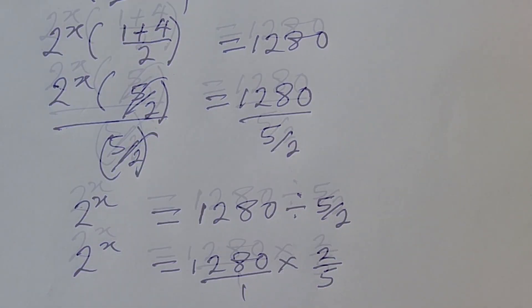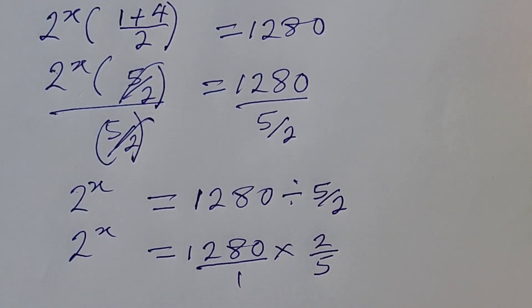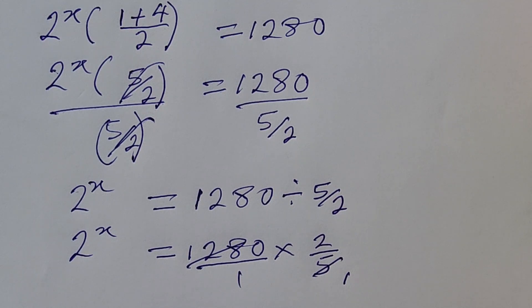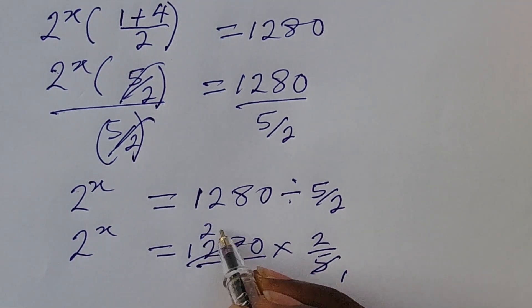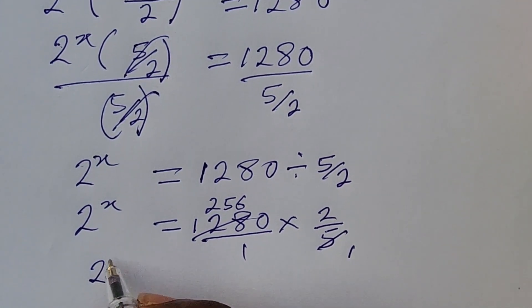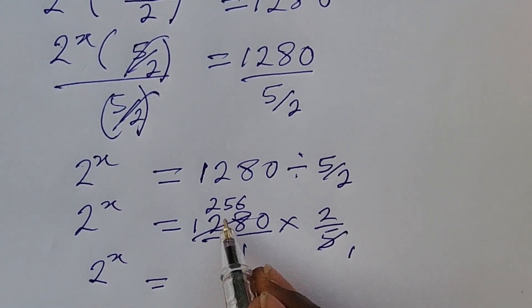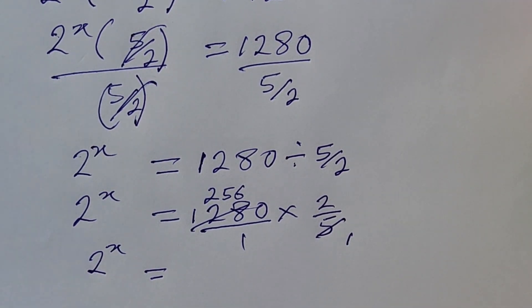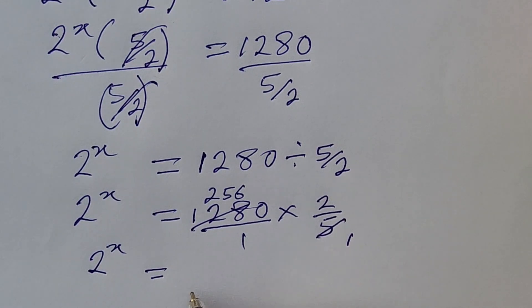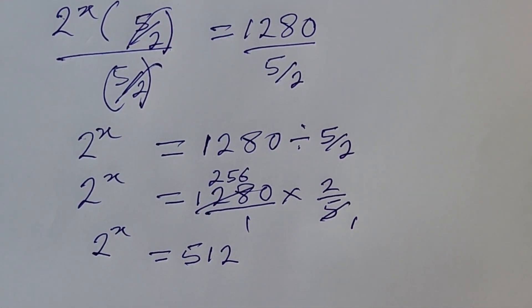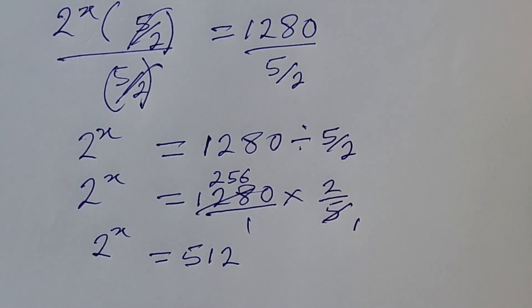Simplifying: 1280 divided by 5 gives us 256, and 256 times 2 gives us 512. So we have 2 to the power of x equal to 512.